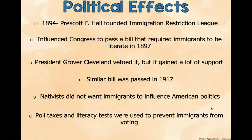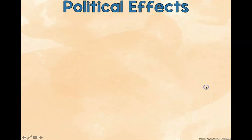In 1894, Prescott F. Hall founded the Immigration Restriction League. They influenced Congress to pass a bill requiring immigrants to be literate in 1897. President Grover Cleveland vetoed it, but a similar bill passed in 1917. Nativists did not want immigrants to influence American politics, fearing America would end up like the countries immigrants fled. Poll taxes and literacy tests were used to prevent immigrants from voting, just as they were used to prevent African Americans from voting.